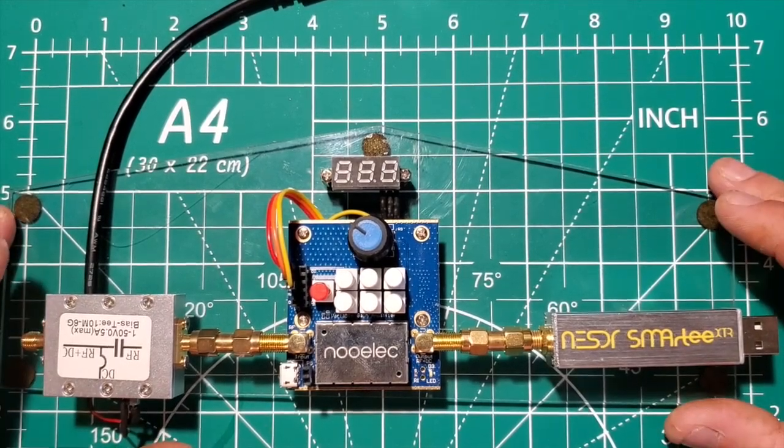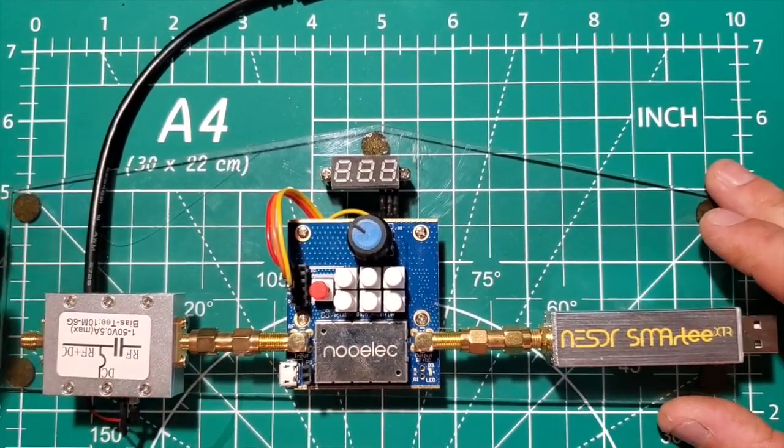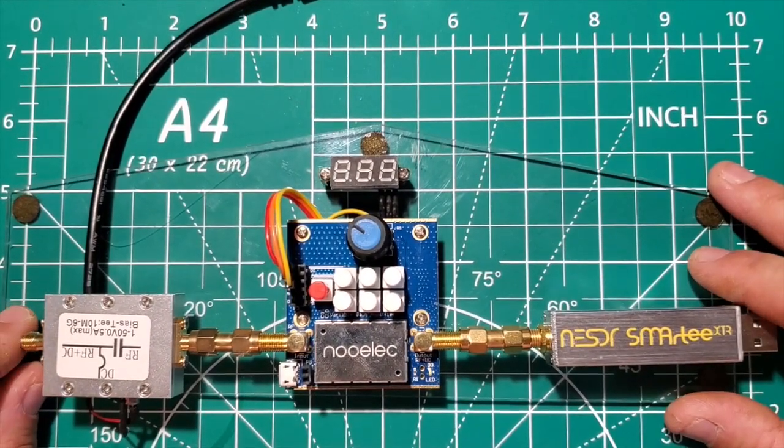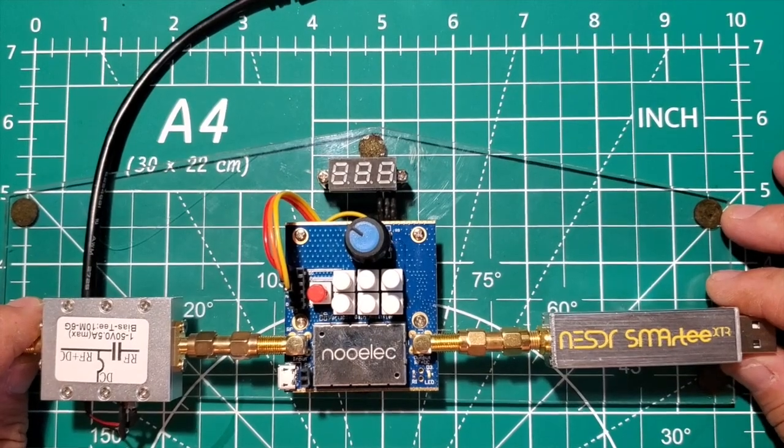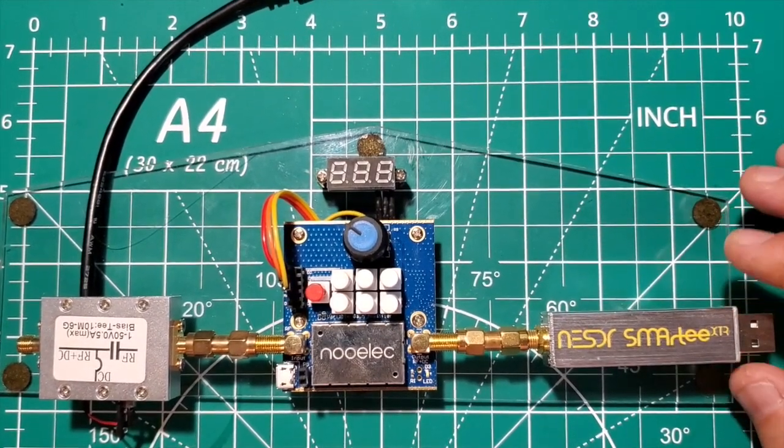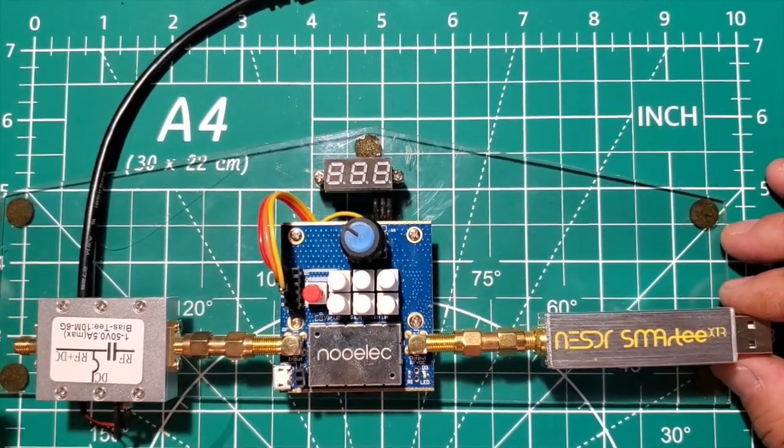Now this setup works pretty good with decoding NOAA weather satellites because I could use this to power the antenna depending on which antenna that I'm using, or if I have a SAW filter or something hooked up to it.